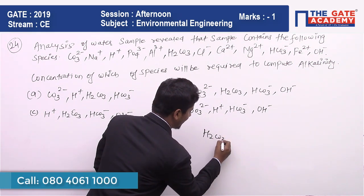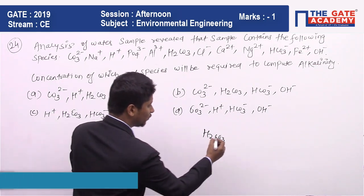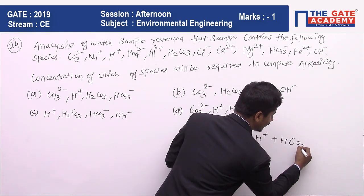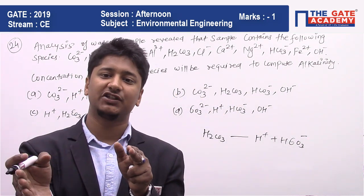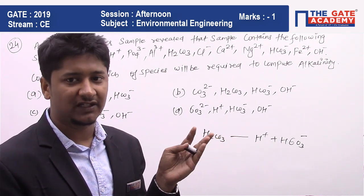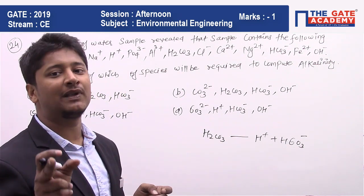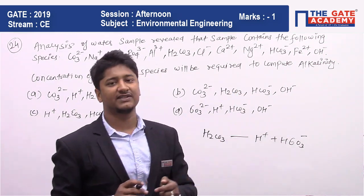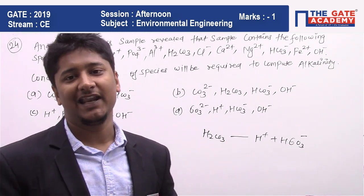H₂CO₃ will dissolve and break down as follows: H₂CO₃ → H⁺ + HCO₃⁻. The H⁺ produced does not contribute to alkalinity — it contributes to acidity, so we don't consider it. However, HCO₃⁻ is responsible for alkalinity. That is why all four species in option B are responsible for alkalinity.